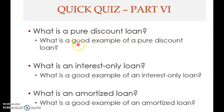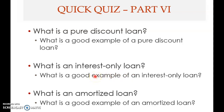An interest-only loan means only interest is paid during the loan term, with no principal repayment until the end. A good example is corporate bonds: investors purchase bonds, receive only interest payments during the bond's term, and then receive the principal back at maturity.